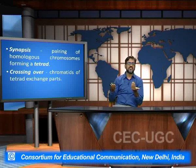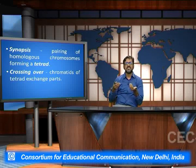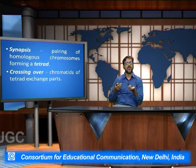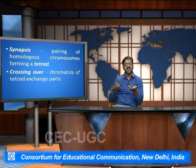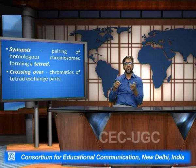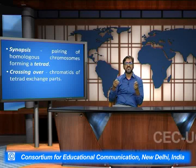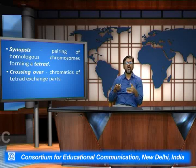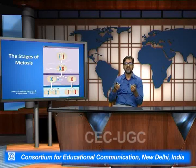There is another term called synapsis. Synapsis is basically the pairing of homologous chromosomes to form a tetrad, then the crossing over in which the chromatid from the tetrad exchange parts takes place. We will see all these examples in the meiosis when we take up the diagrammatic representation.